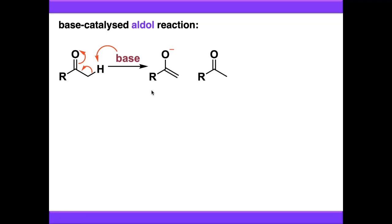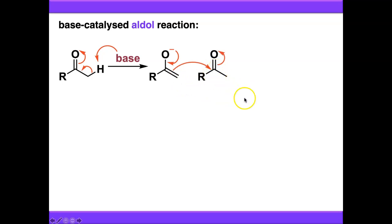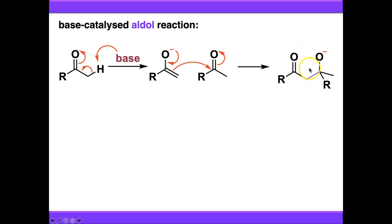We're then going to expose our enolate to an unenolised carbonyl compound — that could be more of this compound or a completely different carbonyl compound. The nucleophilic alpha atom in the enolate is going to attack the electrophilic carbon of the carbonyl compound, forming a bond between the alpha carbon of the enolised carbonyl compound, and we've basically formed a tetrahedral intermediate out of the electrophilic carbonyl compound. The base has removed the proton, so we can get that back and that will make the reaction catalytic.